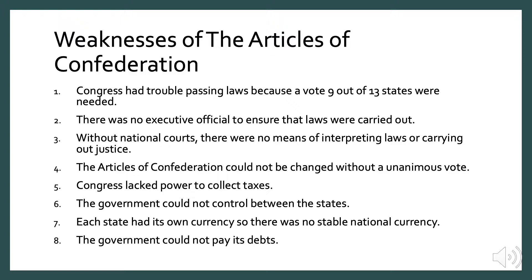There were several weaknesses of the Articles of Confederation: Congress had trouble passing laws because a vote of nine out of 13 states was needed; there was no executive official to ensure laws were carried out; without national courts there was no means of interpreting laws or carrying out justice; the Articles could not be changed without a unanimous vote; Congress lacked power to collect taxes; the government could not control trade between states; each state had its own currency so there was no stable national currency; and the government could not pay its debts.